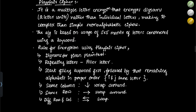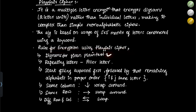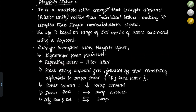Let us look at the rules for encryption using Playfair cipher. First, write the plain text as digrams — club two letters together. If there are any repeating letters within a pair, make use of filler letters.